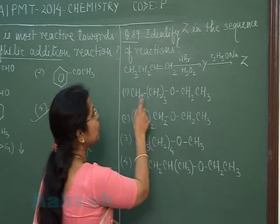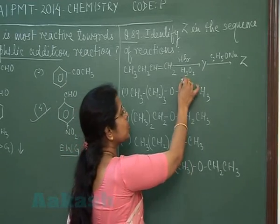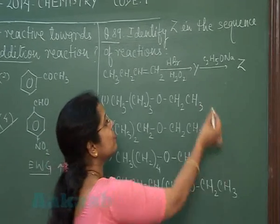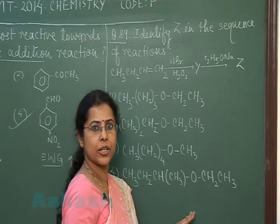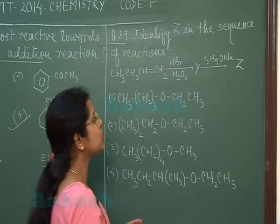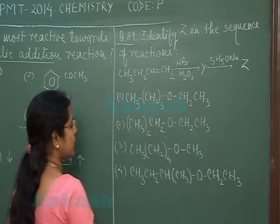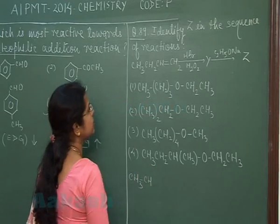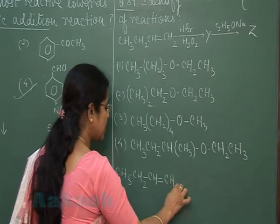Question number 89: identify Z in the sequence of reactions. But-1-ene reacts with HBr in presence of hydrogen peroxide to give compound Y, which when treated with C₂H₅ONa gives product Z. The initial compound is CH₃CH₂CH₂CH=CH₂.